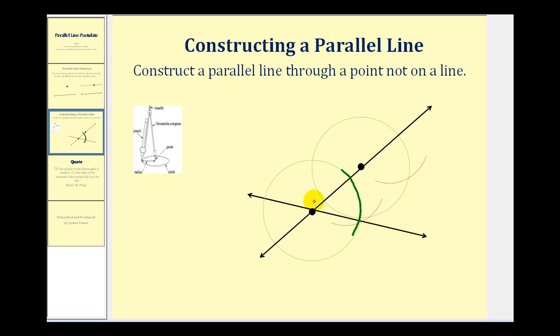Now we'll take the point of the protractor and put it on this point without adjusting the protractor, and swing another arc that intersects this line and extends down toward the given line — something like this.